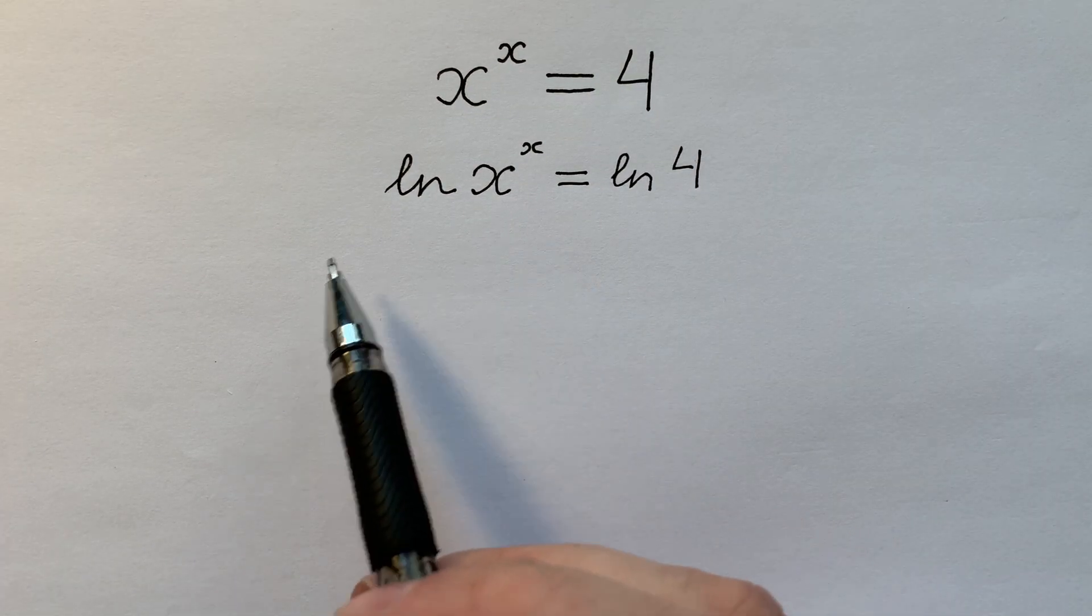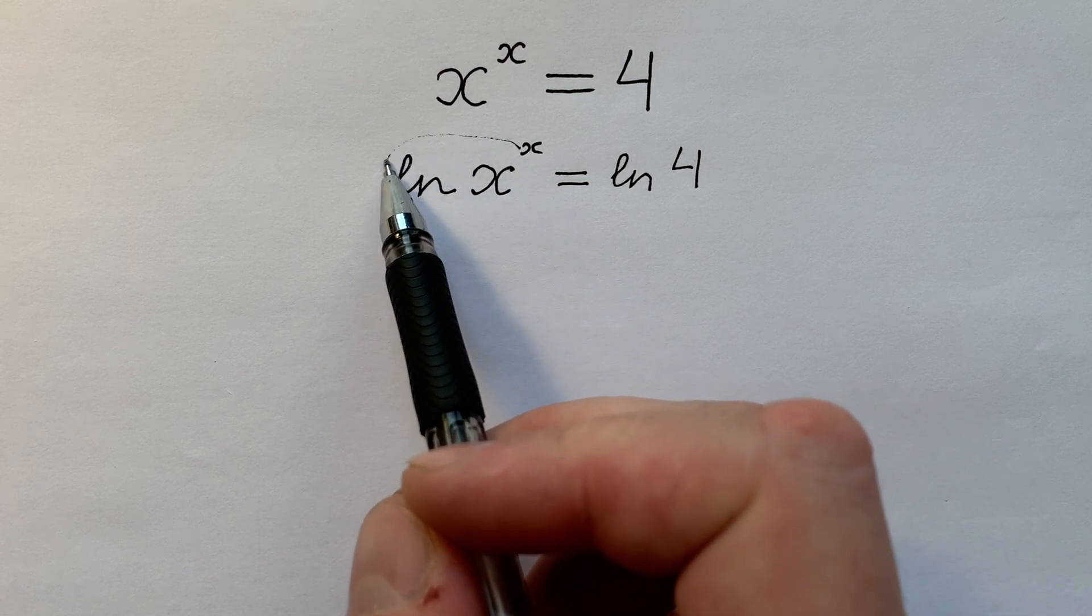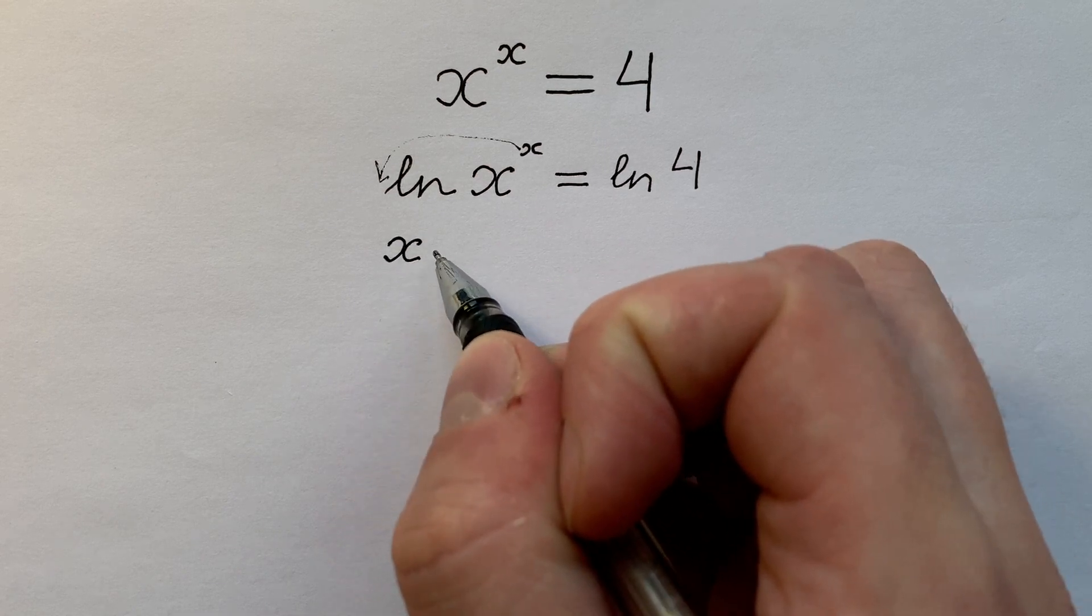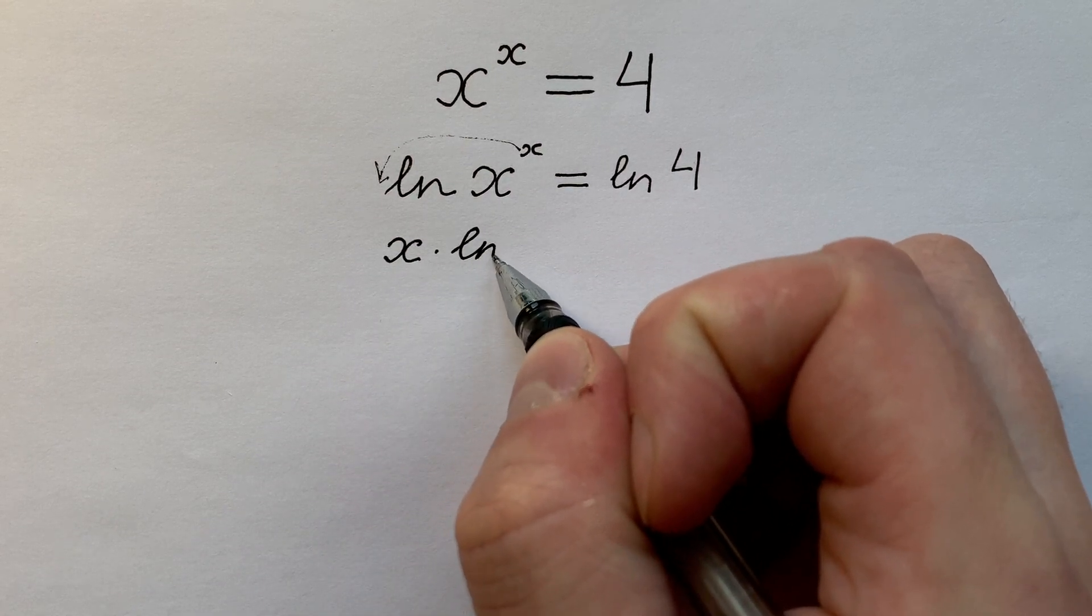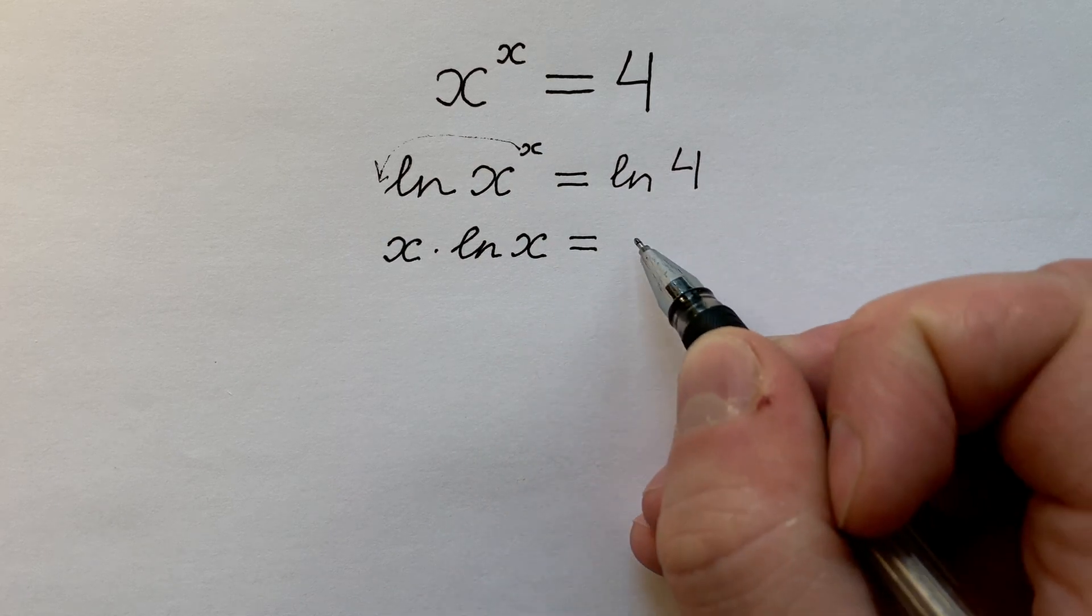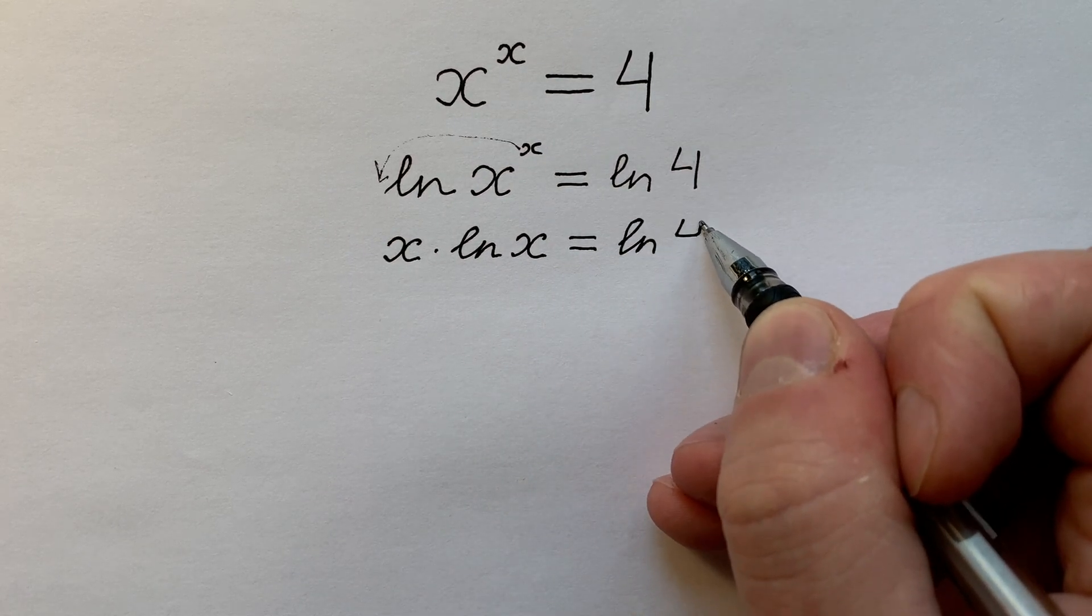Knowing properties of logarithm, we can put this x before logarithm and write this equation as x times natural logarithm x, and it equals to natural logarithm 4.